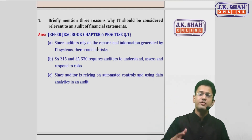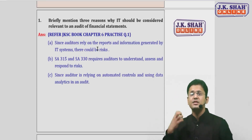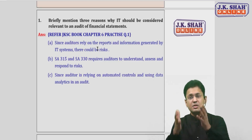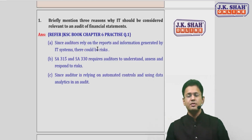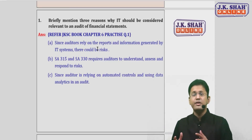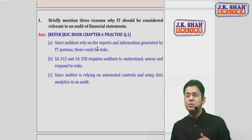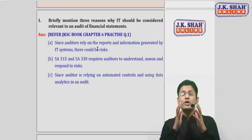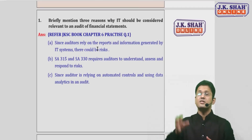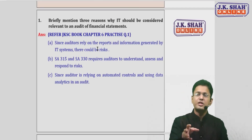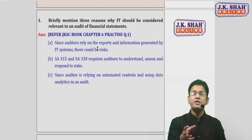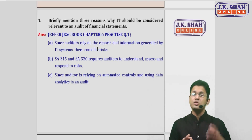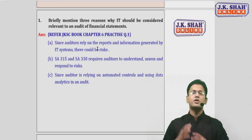If the auditor doesn't consider IT relevant, there could be a risk in the IT system, and that can severely impact the audit. The IT risk can impact auditing aspects severely. The second reason relates to SA 315 and SA 330. Since the auditor is relying on information, reports, and data generated from the IT system, he should consider IT relevant in his audit — otherwise there could be a risk in the IT system that could severely impact the auditor.